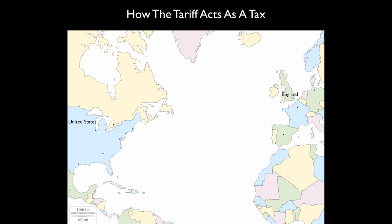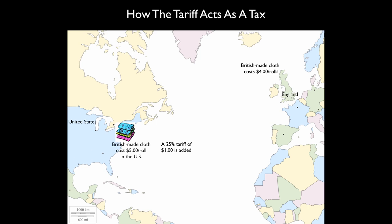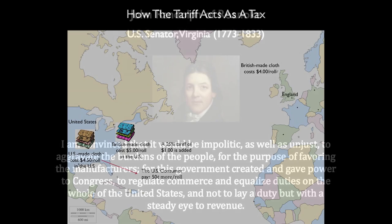A tariff causes a rise in the price of imported goods. The cost of the domestic good could now be priced under the foreign goods. People naturally bought the cheaper goods, but at a higher price than they could have bought the imported goods. In effect, this caused a net gain to the manufacturer but a net loss to the consumer. Since the agricultural regions were net consumers of these goods, they believed tariffs acted as an unfair tax.